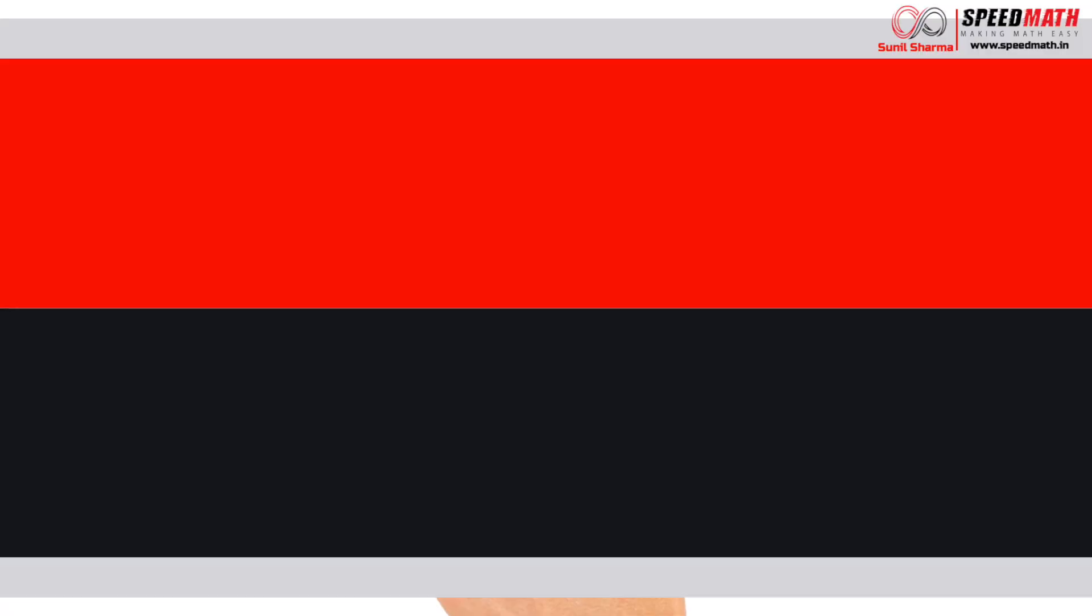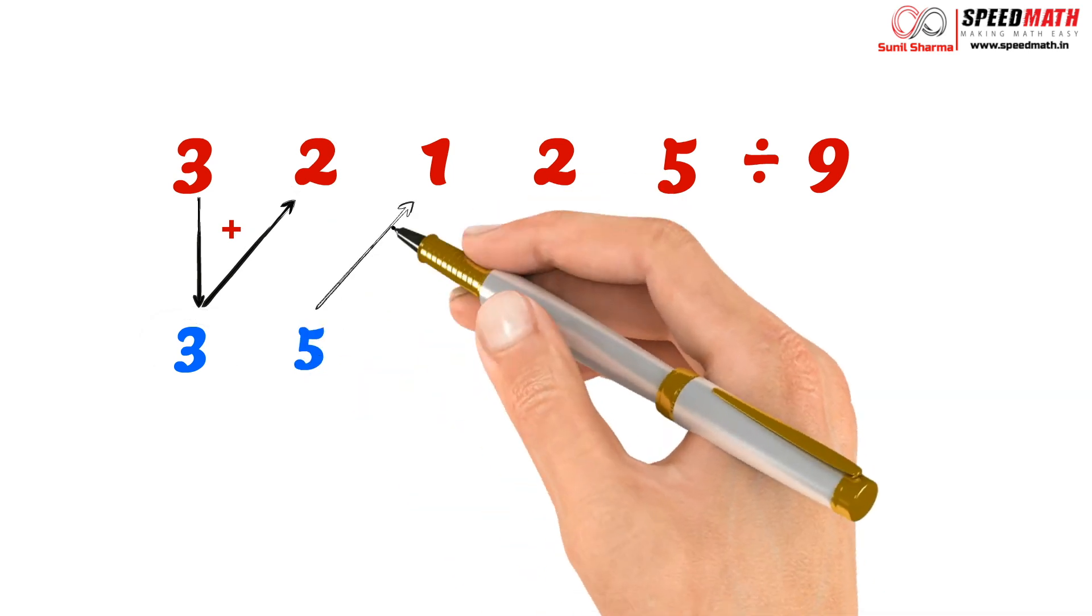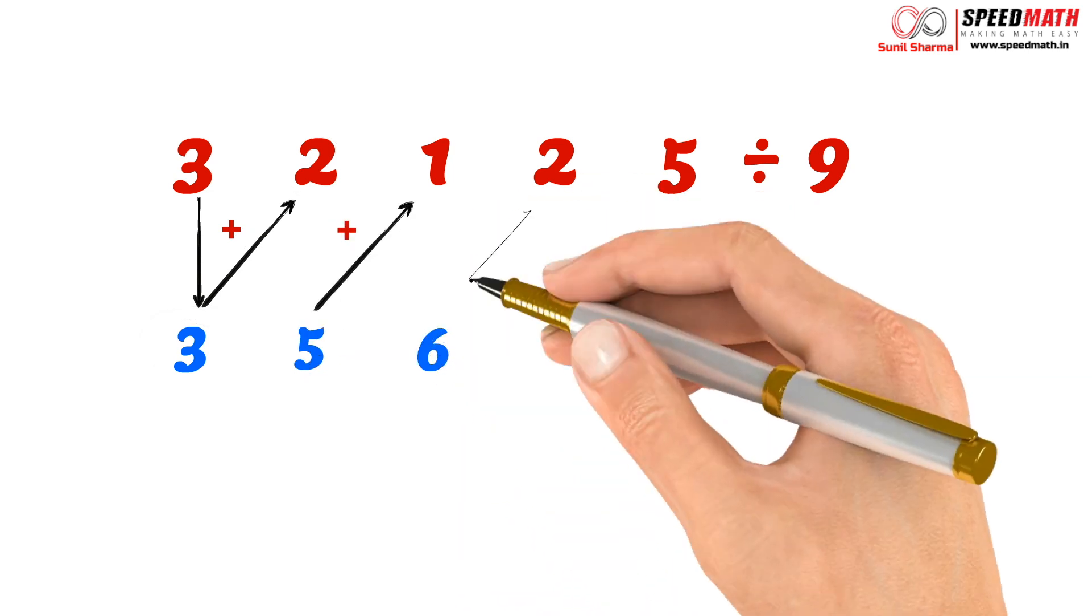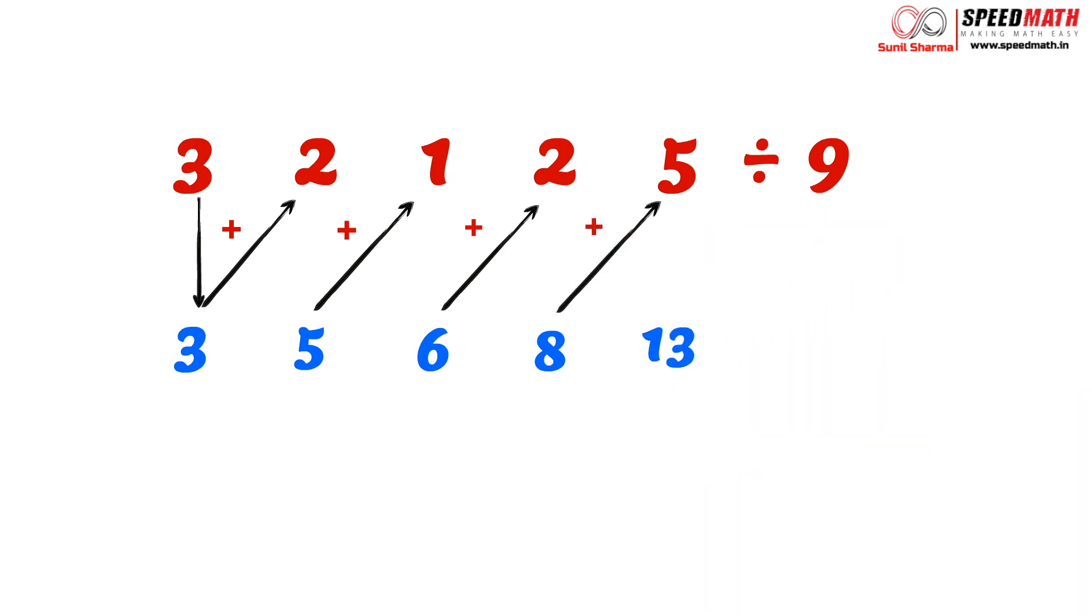So let's check the answer. The first digit as it is is 3, and we are going to add this 3 to the next digit. So 3 plus 2 is 5, 5 plus 1 is 6, 6 plus 2 is 8, 8 plus 5 is 13. But wait, here 13 seems to be bigger than the divisor, and the remainder cannot be greater than the divisor. That is what we have learned, so there is something wrong here, right?